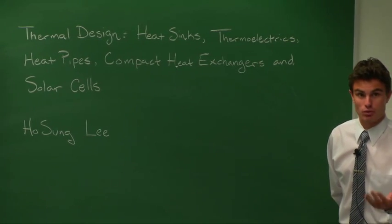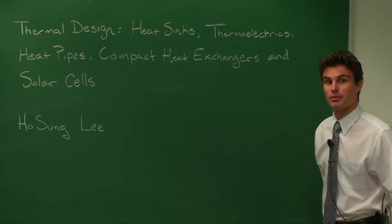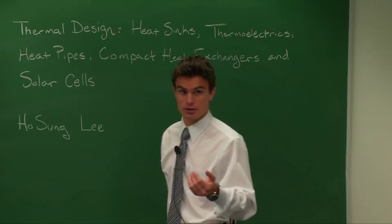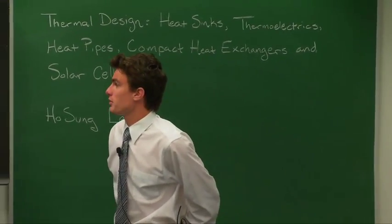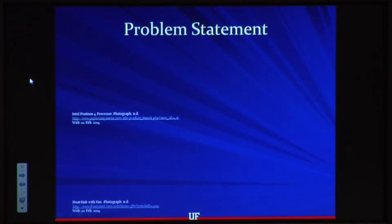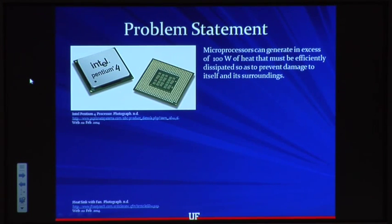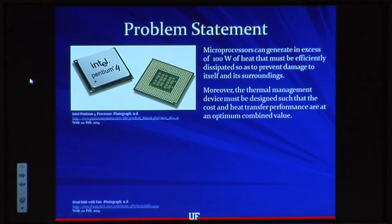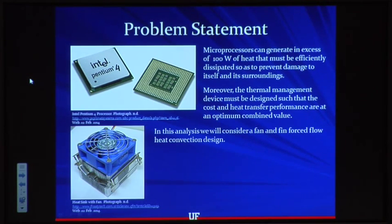If you haven't watched Lecture 1, we're going to be referring to some of that analysis here, so I would recommend going through that so that you don't get confused. The problem statement is that microprocessors can generate lots of heat that needs to be dissipated away from the system — in excess of 100 watts — which could damage not only itself but the surrounding components. The thermal management device needs to be designed to get rid of that heat in a cost-effective manner.